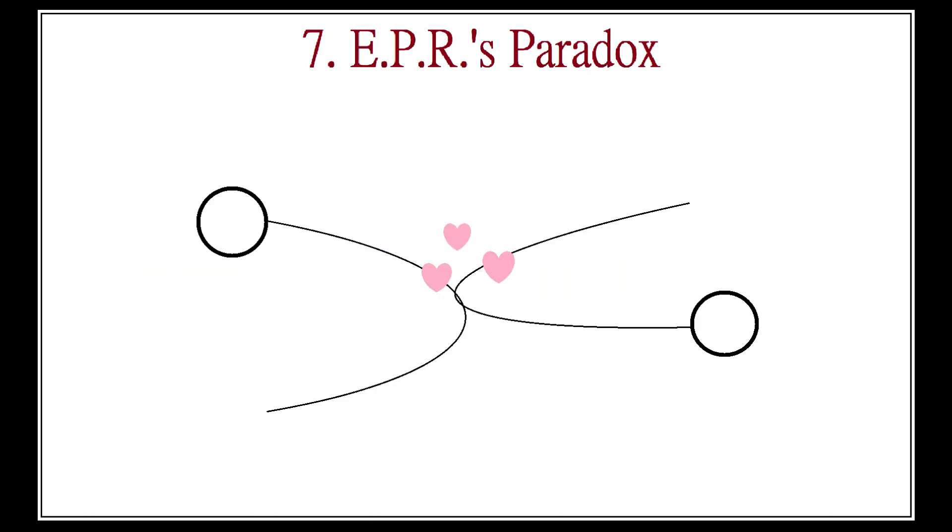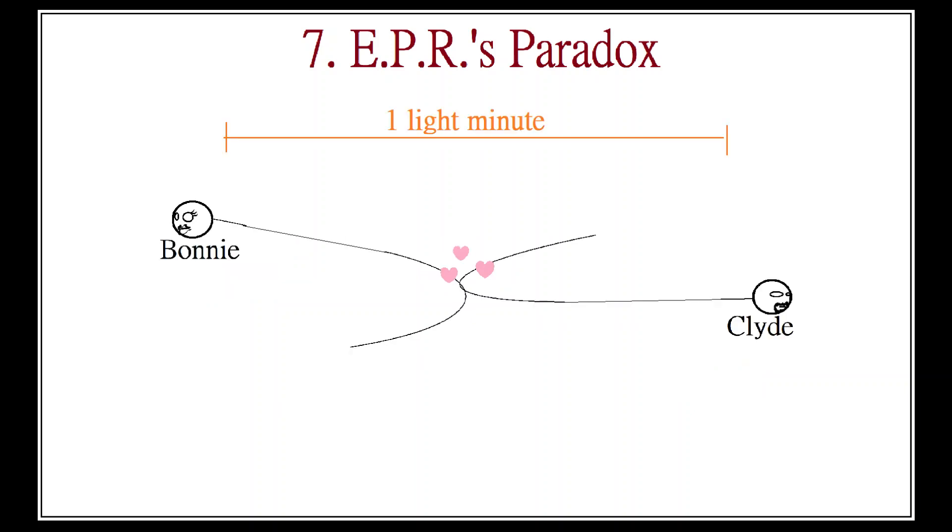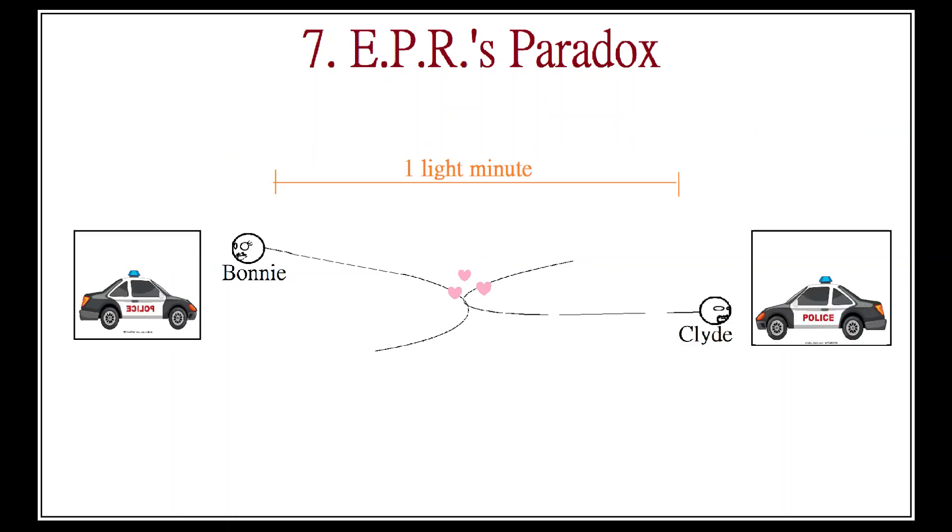Now suppose two photons interact, become entangled, and then go their separate ways. We'll call these two photons Bonnie and Clyde. Suppose that Bonnie and Clyde manage to get a full light minute away from each other without re-entangling with any new particles. Finally, suppose we have two teams, each waiting for one of the particles to arrive on each end of the field so they can measure one of its properties.